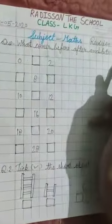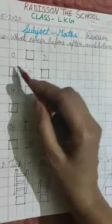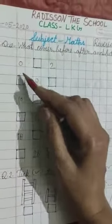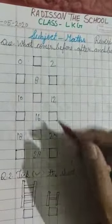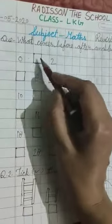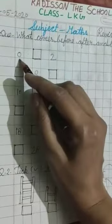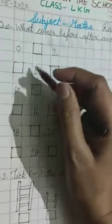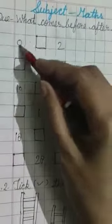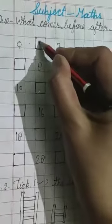What comes before, after and between? You have to write what comes before, after and between. This is mixed up. What comes after 0, between 0 and 2? What comes after 0? 1.